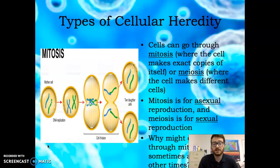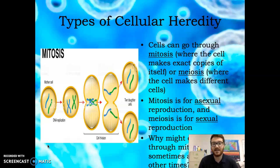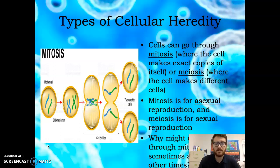Whereas in meiosis, you want it to change. You don't want to be an exact genetic copy of your parents — looking in the mirror and seeing an exact image of how your dad was when he was 12 or 13 would be kind of scary. Mitosis is asexual, and meiosis is sexual reproduction. That's why mitosis and meiosis differ.